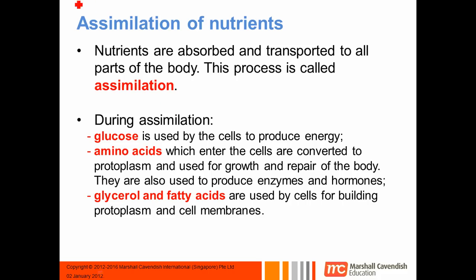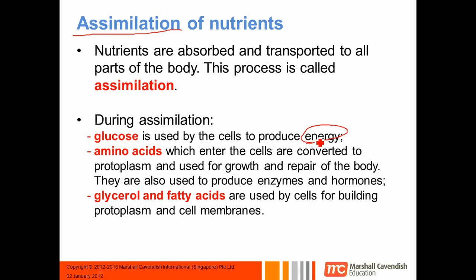Assimilation of nutrients refers to what happens to the nutrients after they get absorbed. During assimilation, glucose is used by cells to produce energy — which you would know from the carbohydrate chapter, since the main role of carbohydrates in the body is to produce energy.